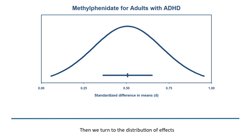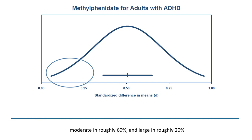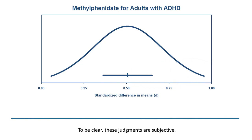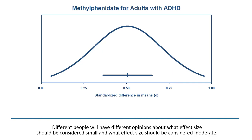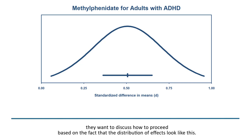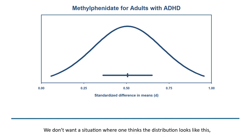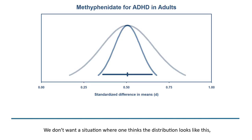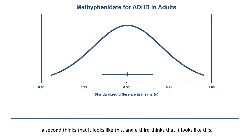Here we have the mean and the confidence interval. The mean is roughly 0.5 and the confidence interval is 0.35 to 0.65, which tells us that the mean effect falls in this range. Then we turn to the distribution of effects. The impact of the drug is small in roughly 20% of populations, moderate in roughly 60%, and large in roughly 20%. These judgments are subjective — different people will have different opinions about what effect size should be considered small or moderate.